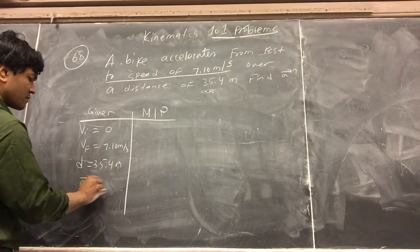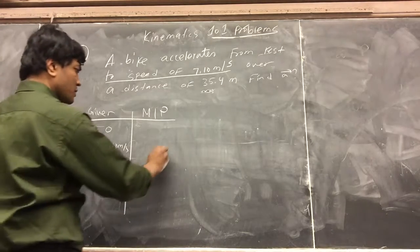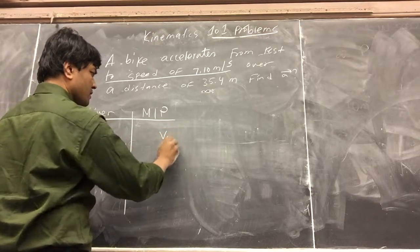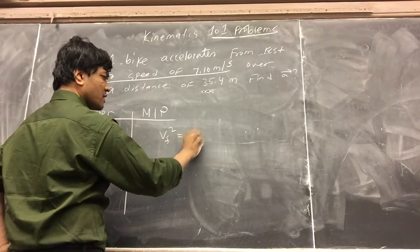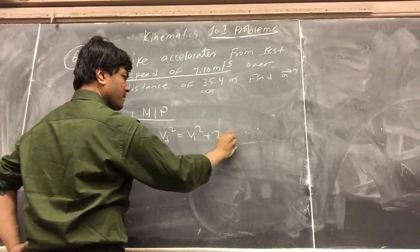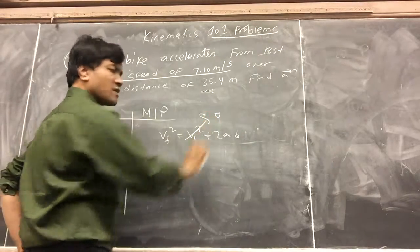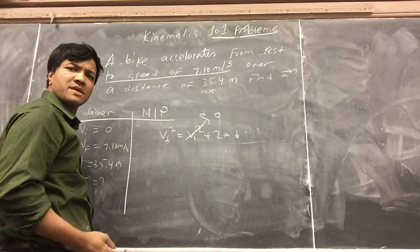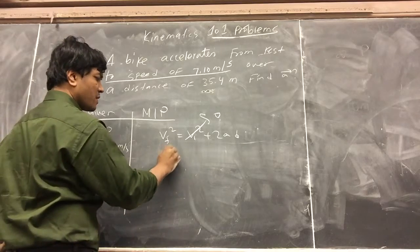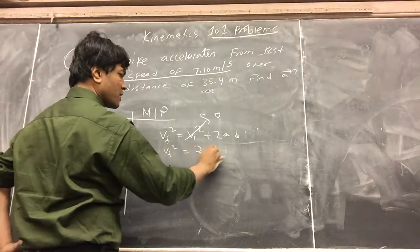Acceleration. So we're going to use v final squared equals v initial squared plus 2ad. The initial velocity is 0, which makes our math much easier. So v final squared is equal to 2ad.